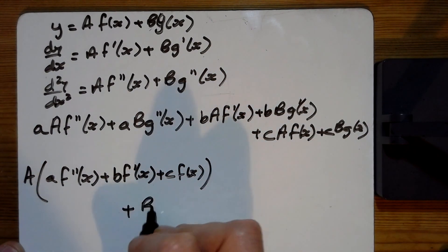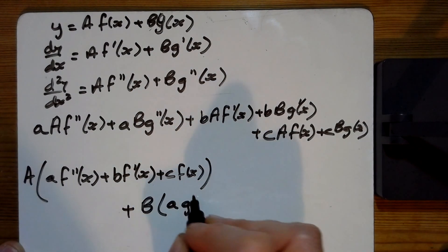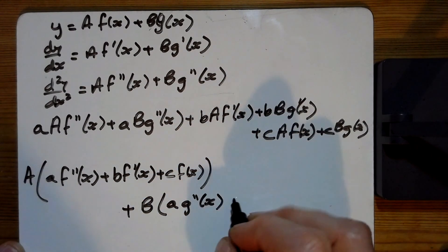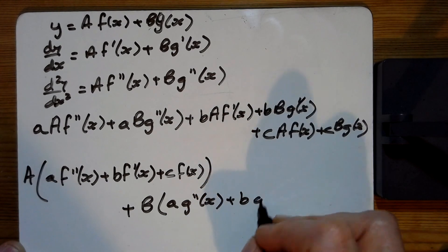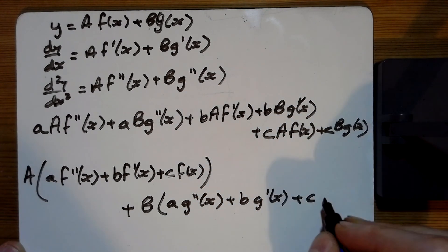And then we've also got b lots of, and do the same thing here, a lots of g second derivative of g and the first I've got this and then finally the original there.